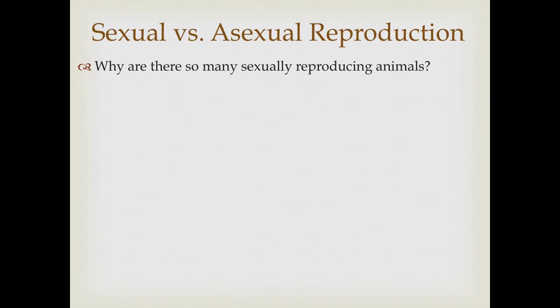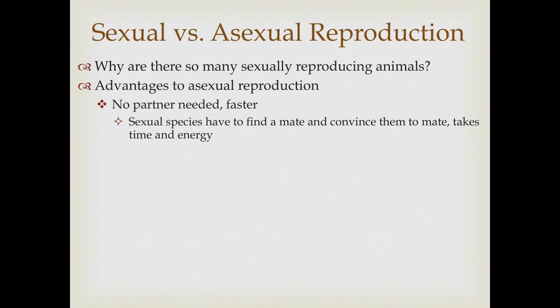We've talked about the diversity of reproductive strategies. Most animals reproduce sexually, so why is that? From an evolutionary and ecological point of view, there are several advantages to asexual reproduction. First, you don't need a partner — when conditions are right, you simply reproduce, whereas in sexual species you have to find a mate and convince them to mate, which takes time and energy. That's a huge advantage to asexual reproduction.